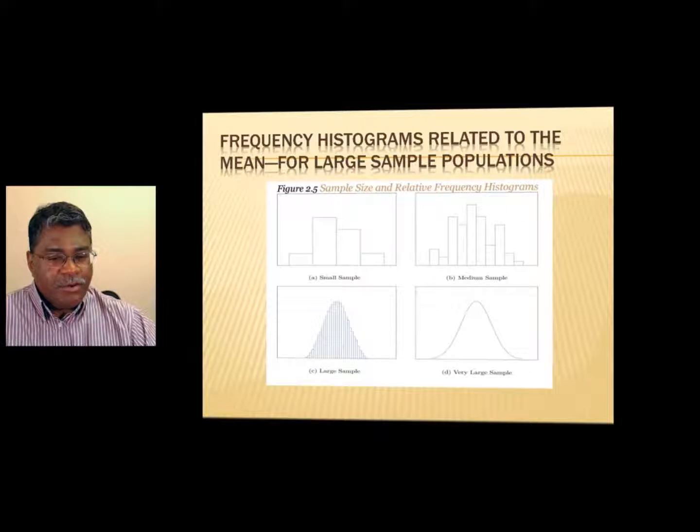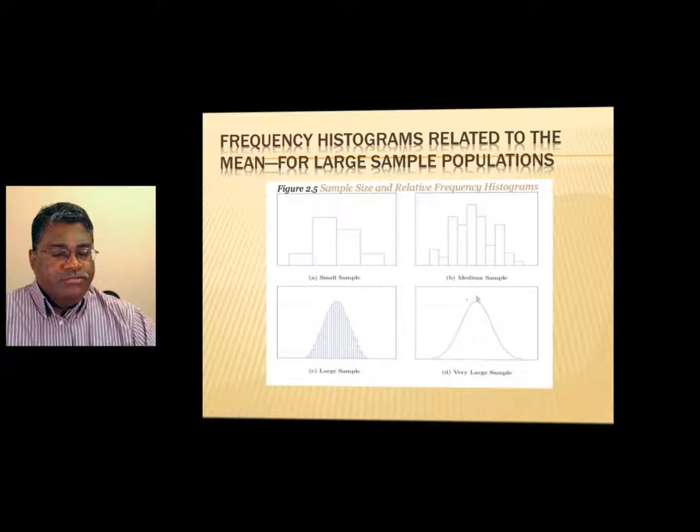Most of your population—now we define population in the statistical way that is relevant, the population being considered—is going to be around the average, and a smaller number is going to be on the negative end.